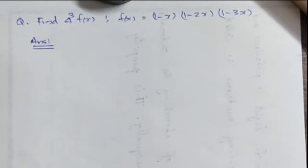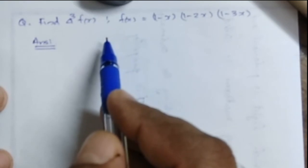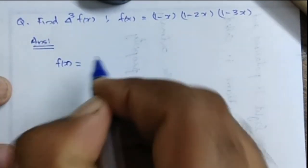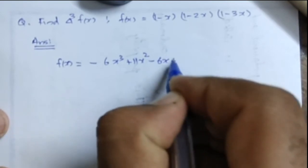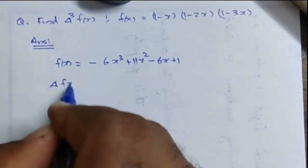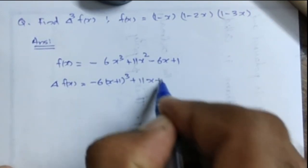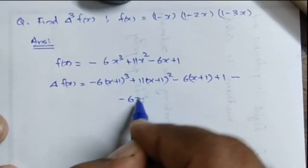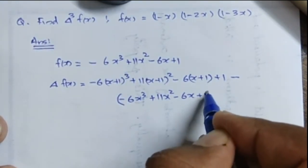Although it is not necessary, you can also prove this the long way. With f(x) = (1 - x)(1 - 2x)(1 - 3x), which equals -6x³ + 11x² - 6x + 1, we take the first forward difference: delta f(x) = [-6(x+1)³ + 11(x+1)² - 6(x+1) + 1] - [-6x³ + 11x² - 6x + 1].